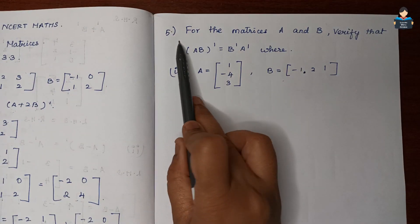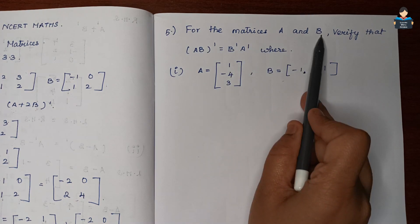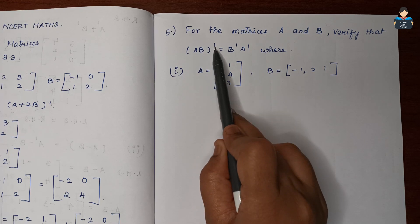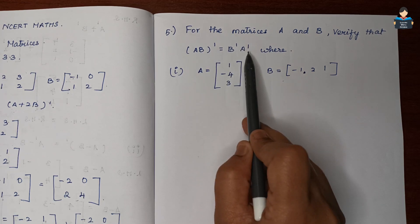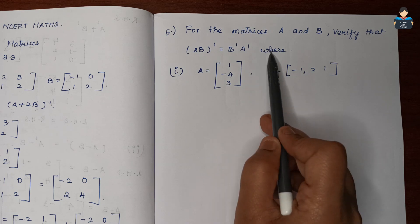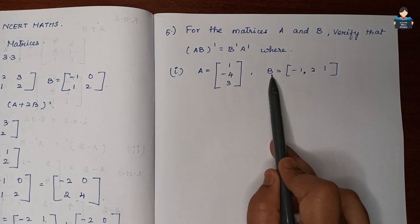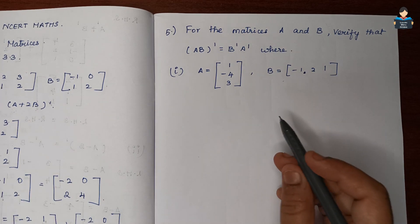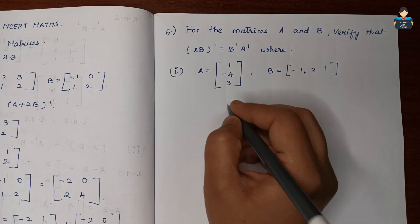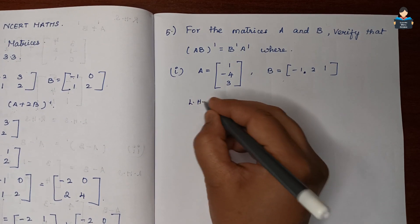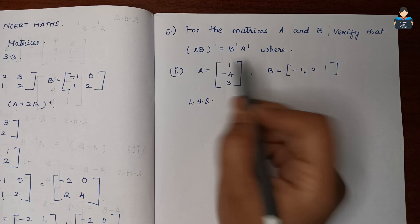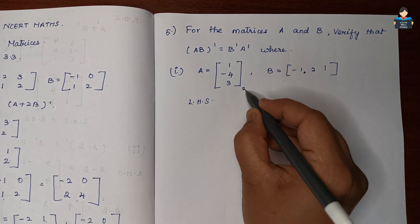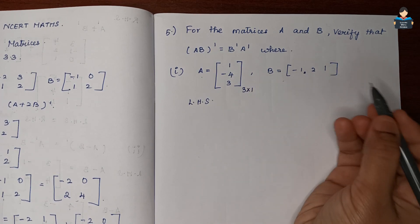Question 5: For the given matrices A and B, verify that (A·B) whole transpose = Bᵀ × Aᵀ, where A is a matrix and B is a matrix. First we solve the LHS part. For LHS, we compute A × B. A is a 3×1 matrix.